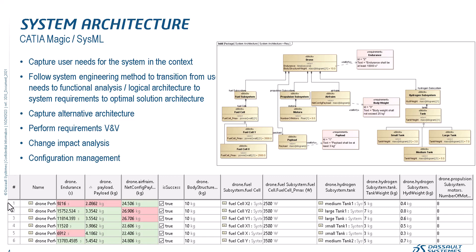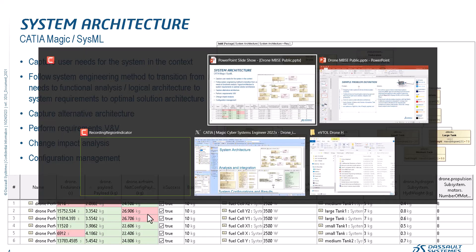Here we have configurations based on the same system architecture. At the top you see alternatives — for example, fuel cells, and for tanks: small, medium, and large tank for the drone. There are requirements with limitations for payload, airframe, and performance endurance. Those configurations based on those alternatives are captured as instances, and we can also see requirements verification based on that.